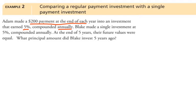However, Blake made one single investment at 5% compounded annually. At the end of 5 years, their values were equal and I want to know what amount Blake invested 5 years ago.